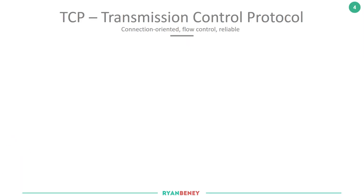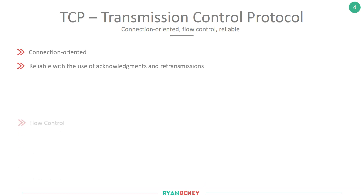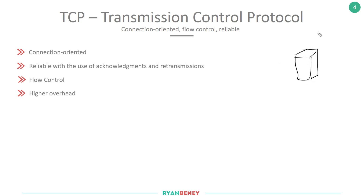Moving on to TCP, the Transmission Control Protocol. TCP is connection-oriented, it's reliable, and it uses acknowledgements and retransmissions to achieve that. It has flow control, but it has higher overhead. Going back to our example — we have a remote server, this time an HTTP server running the HTTP process, which listens on port 80 using TCP. This PC is going to send an HTTP GET message because it wants an HTML web page from the remote server.